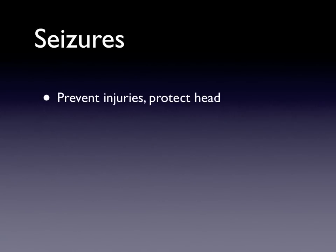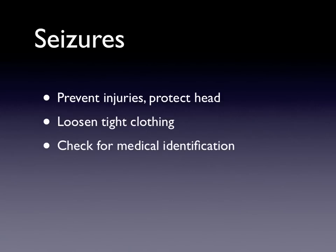If a person has a seizure in your workplace or home, your primary goal is to prevent injuries from the seizure itself. Protect their head. Clear the area around the person while trying to respect their privacy, as seizures can be embarrassing in public places. Move things they could hit with their bodies out of the way. If possible, loosen any tight clothing such as coats and jackets to remove anything that might restrict breathing. Check for medical identification, especially after the seizure is over, and place the person in the recovery position when safe to do so.